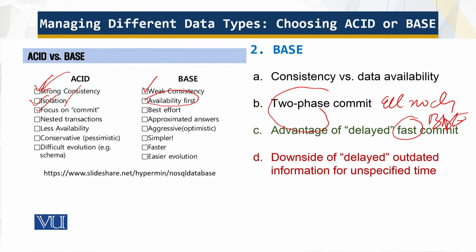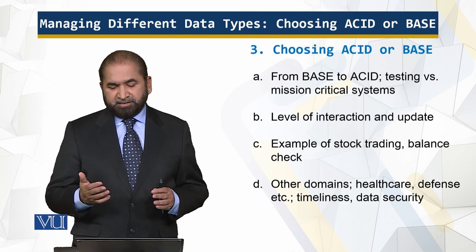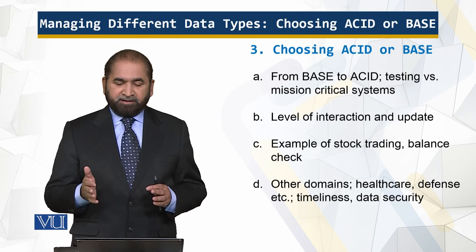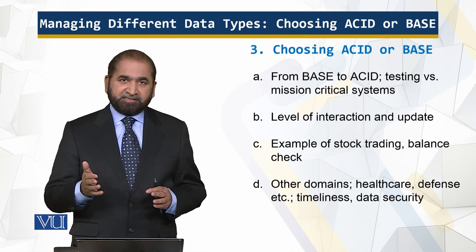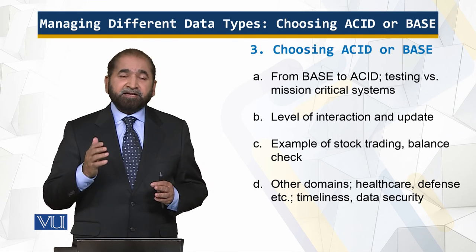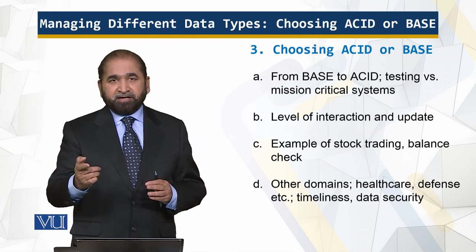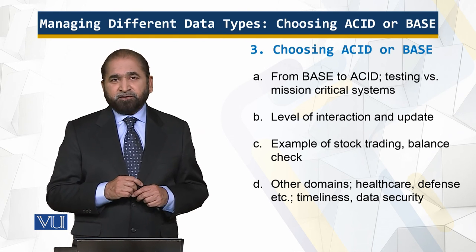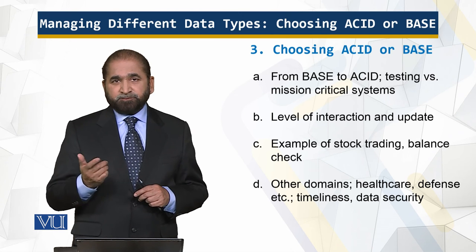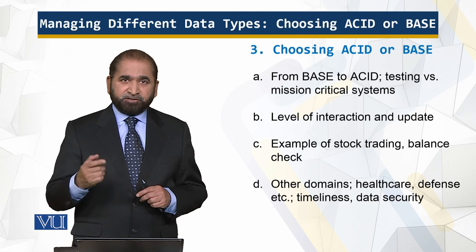If a Facebook message is late by a couple of minutes, no problem. However, if you send a payment order to your bank, you want that to be immediately available and immediately visible. So choose ACID or choose BASE. Companies typically move from BASE to ACID while testing their application and system, and then adopt ACID compliance. ACID or BASE depends upon the interaction of the user with the data and how frequently the data is updated — for example, a Facebook post versus making transactions at an ATM.